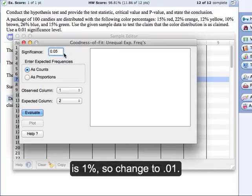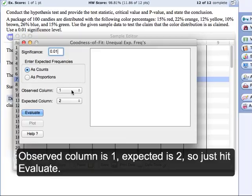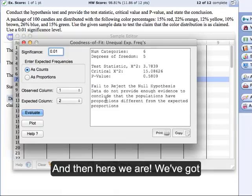Our significance level was 1%, so change that to 0.01. The observed column is 1, the expected is 2, and then just hit evaluate. And then here we are.